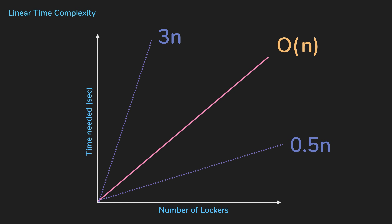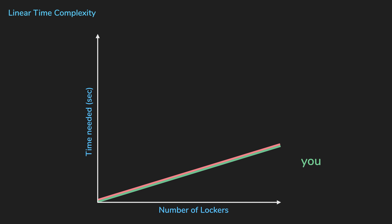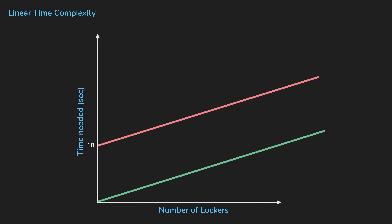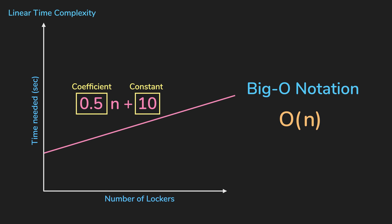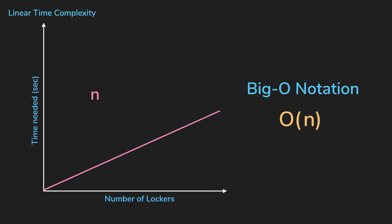Some algorithms might have a slow startup time. Let's say you and I are both able to open a locker in half a second, but I have to eat a sandwich for 10 seconds before I start to search. Even though I have a longer startup time, my algorithm is still asymptotically equivalent to yours. We'll talk about what asymptotically means later. So in summary, when we are talking about big O notation, the coefficients or constants don't matter. It's just O(N). We call this linear time complexity.